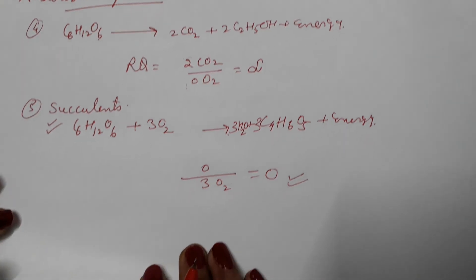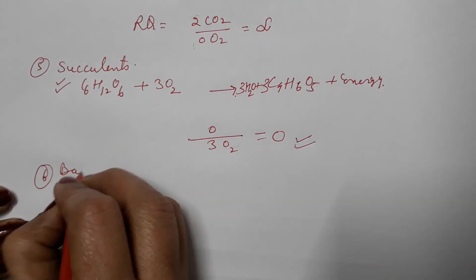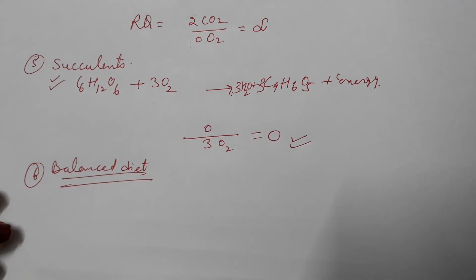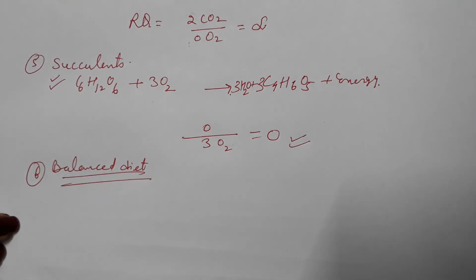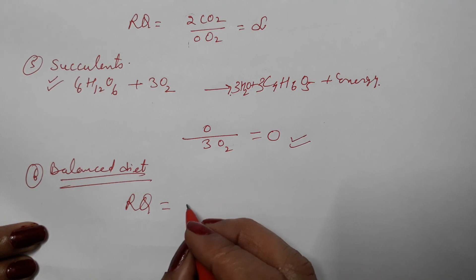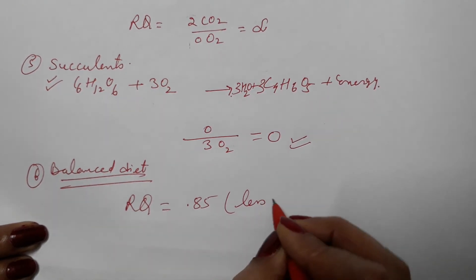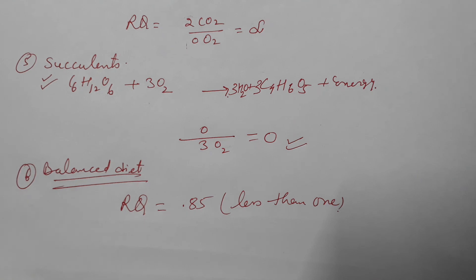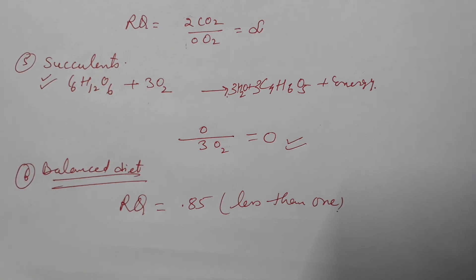What is the RQ value in case of a balanced diet? In a balanced diet, the respiratory substrate may include carbohydrate, glucose, protein, and fat. The RQ value for a balanced diet is approximately equal to 0.85, which is less than 1. To summarize, RQ is the ratio of CO2 released to oxygen consumed, and its value differs for each type of respiratory substrate.